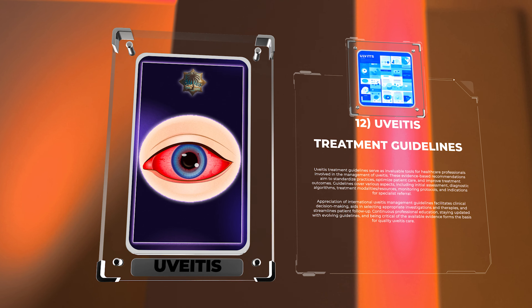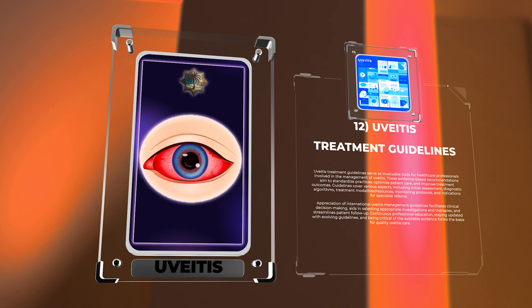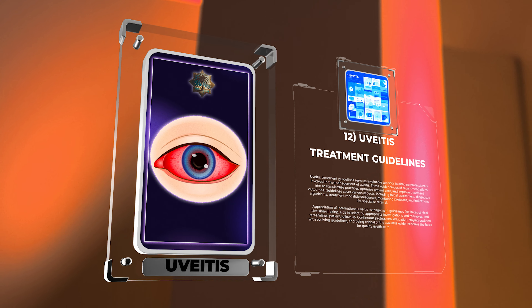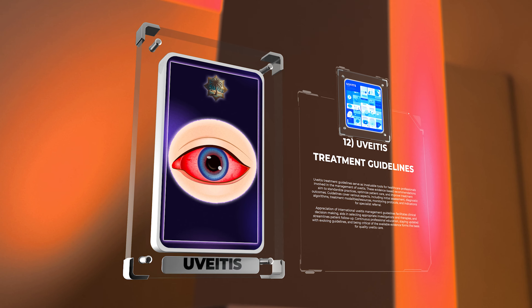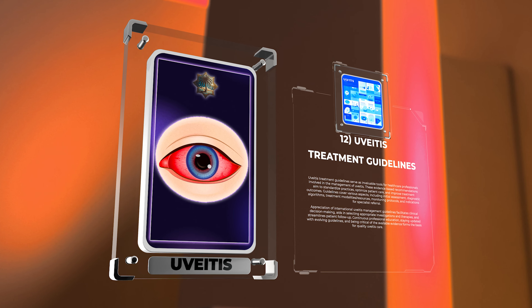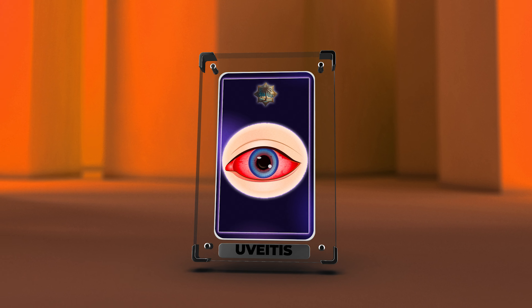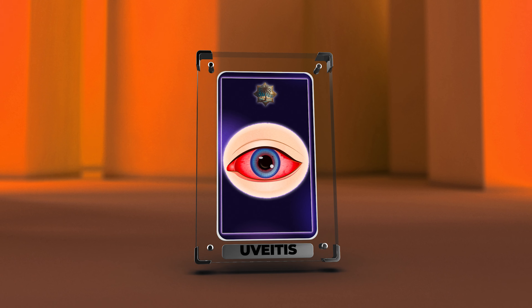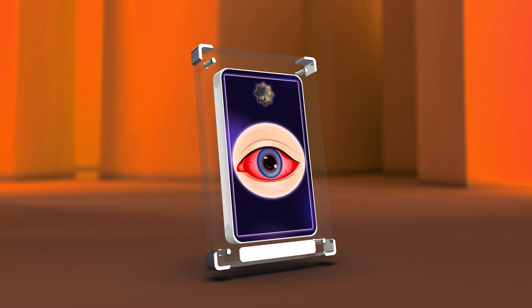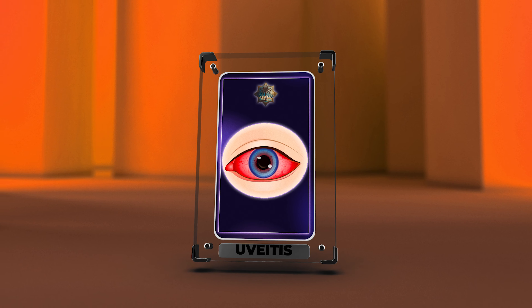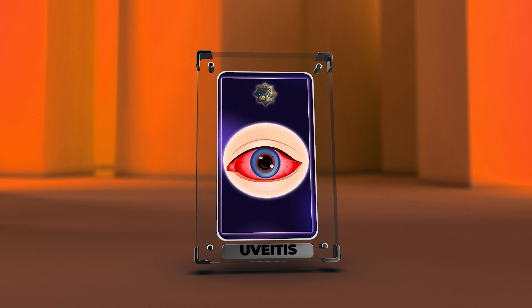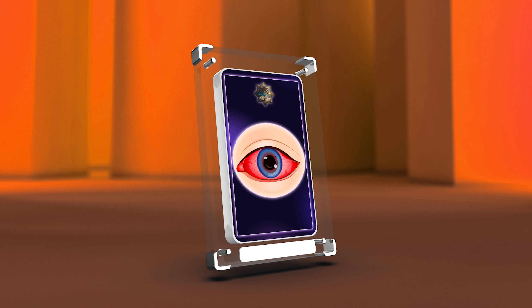Continuous professional education, staying updated with evolving guidelines, and being critical of the available evidence forms the basis for quality uveitis care. In conclusion, uveitis is a complex condition that involves various aspects such as anatomy, diagnosis, and treatment. It is important for ophthalmologists to collaborate with other specialties and follow evidence-based guidelines for optimal patient care.